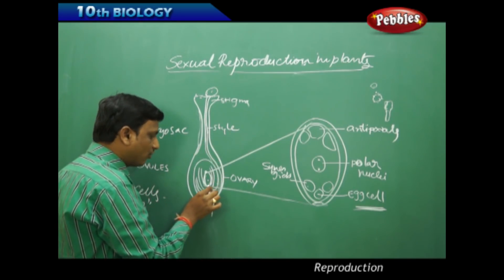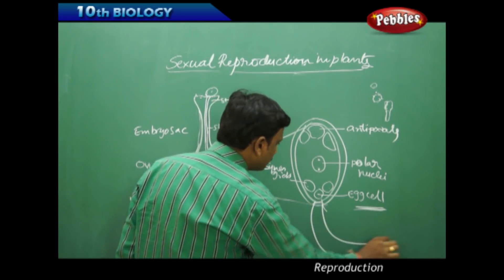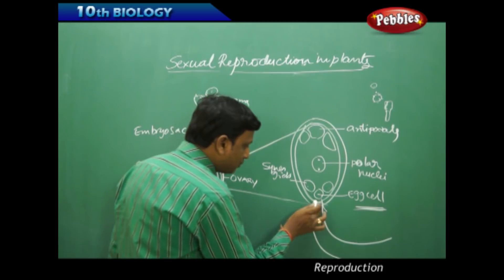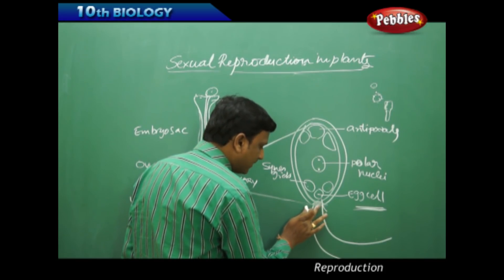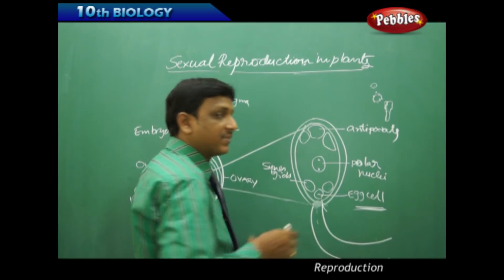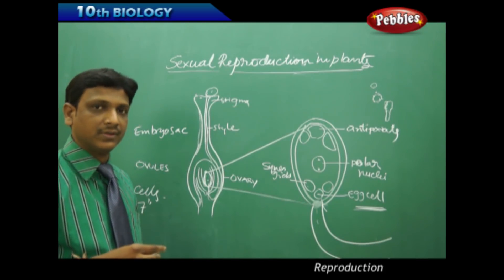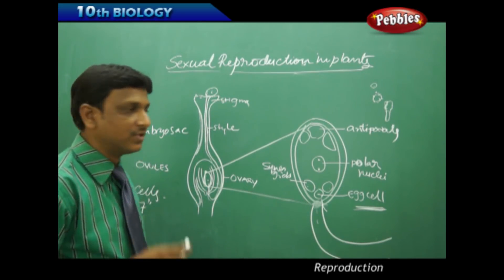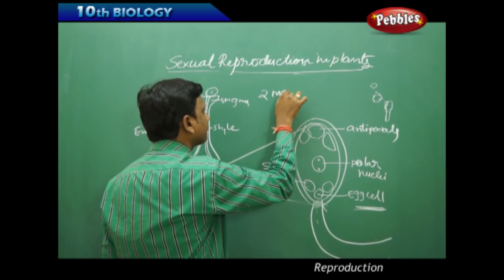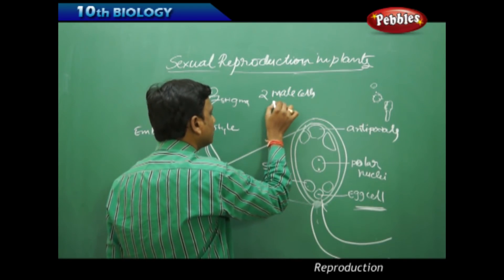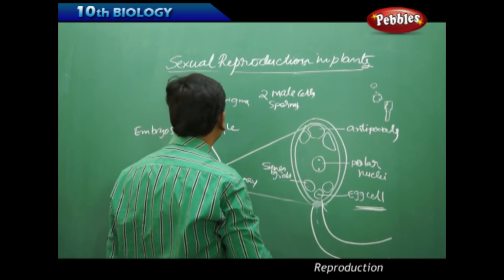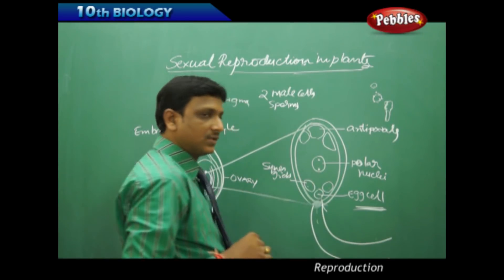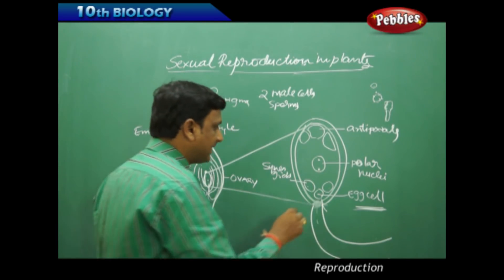The tube enters the ovule all the way to the embryo sac. The end of the tube ruptures and opens the door for entry. The mature pollen grain consists of two sperm cells. These two sperm cells travel along the tube into the embryo sac. The first sperm cell fuses with the egg cell — fertilization takes place.